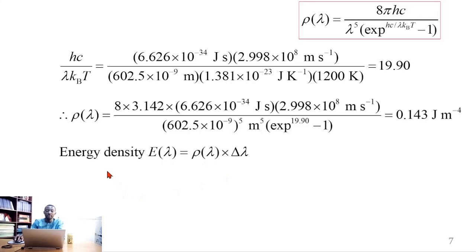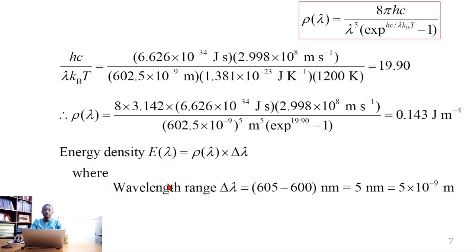So the energy density is the product of the energy distribution times the wavelength range.